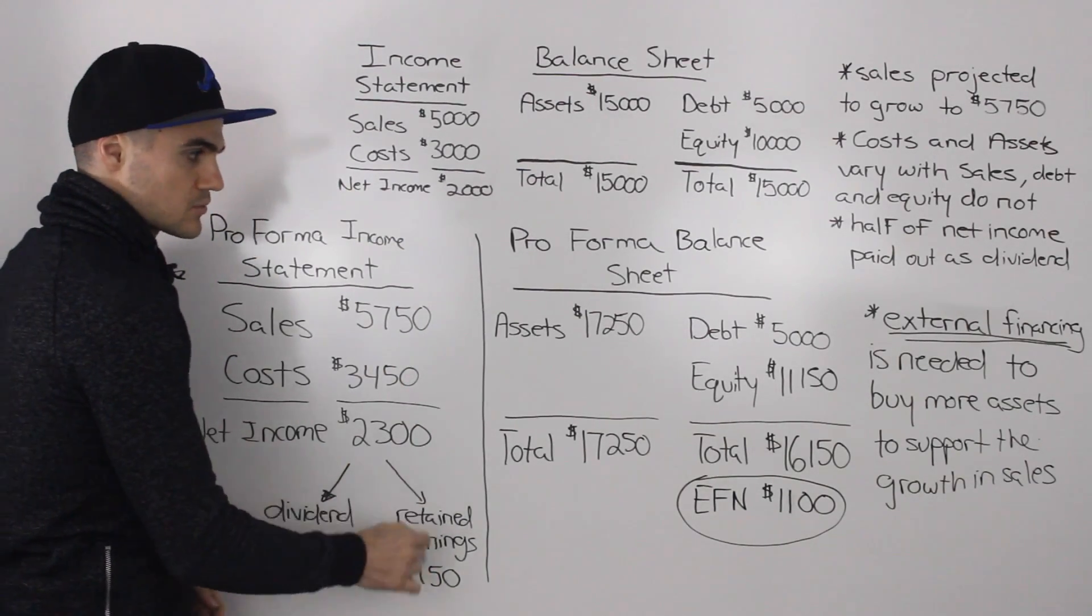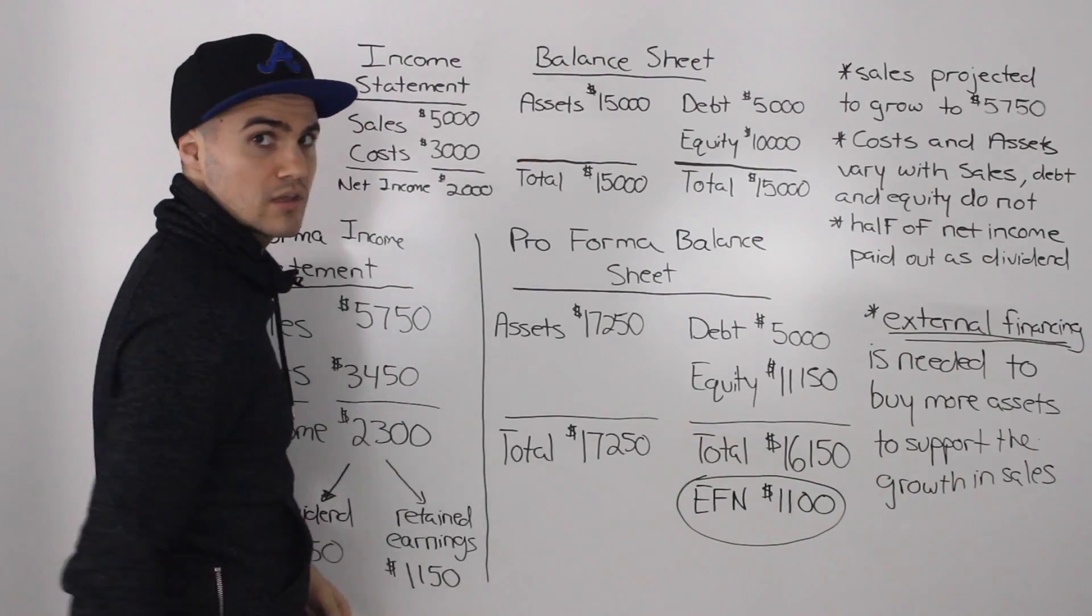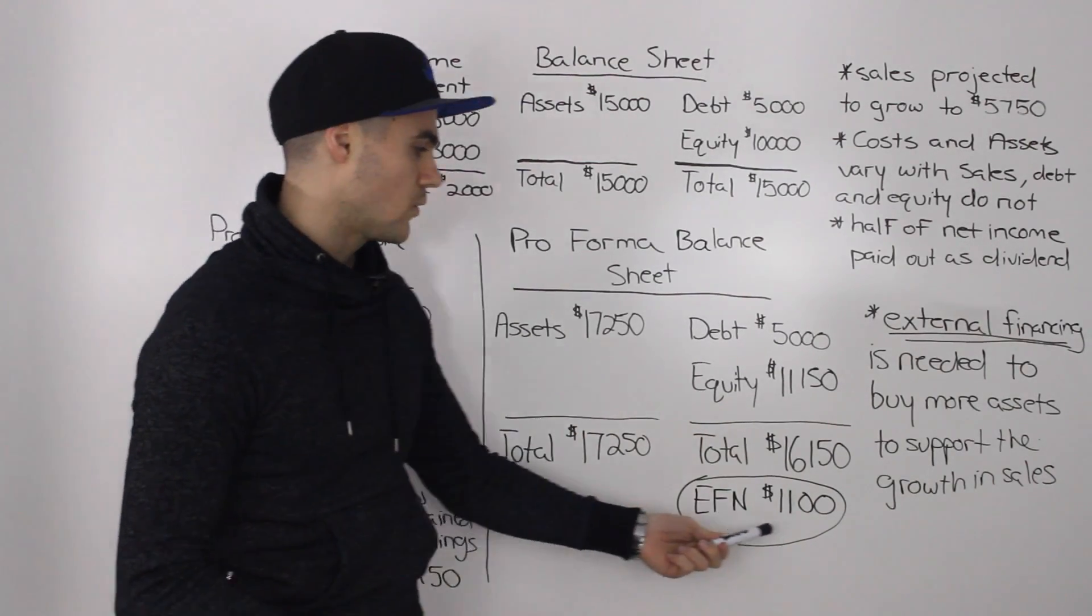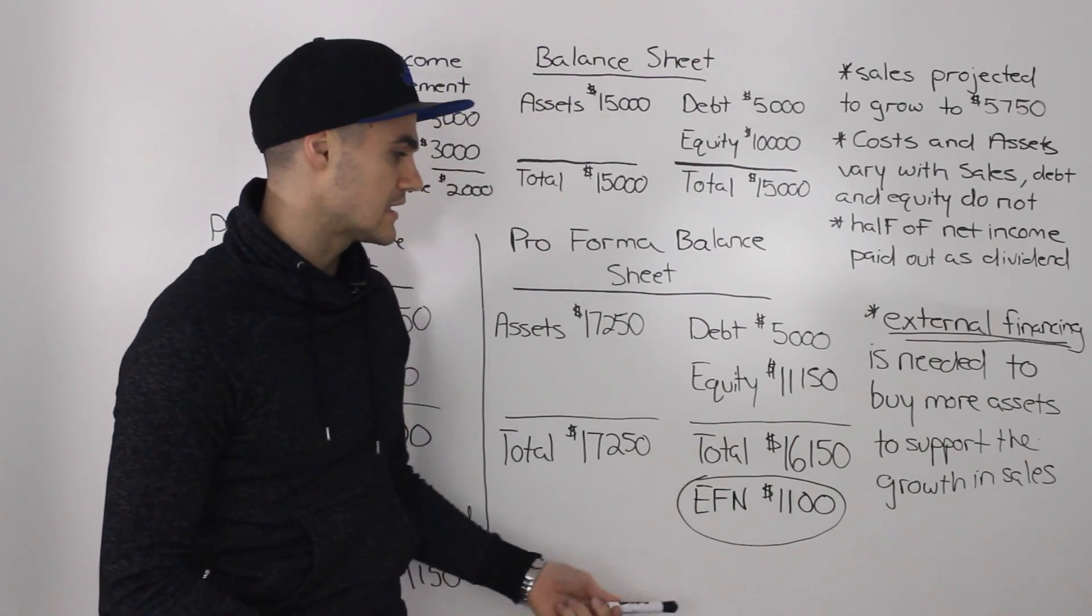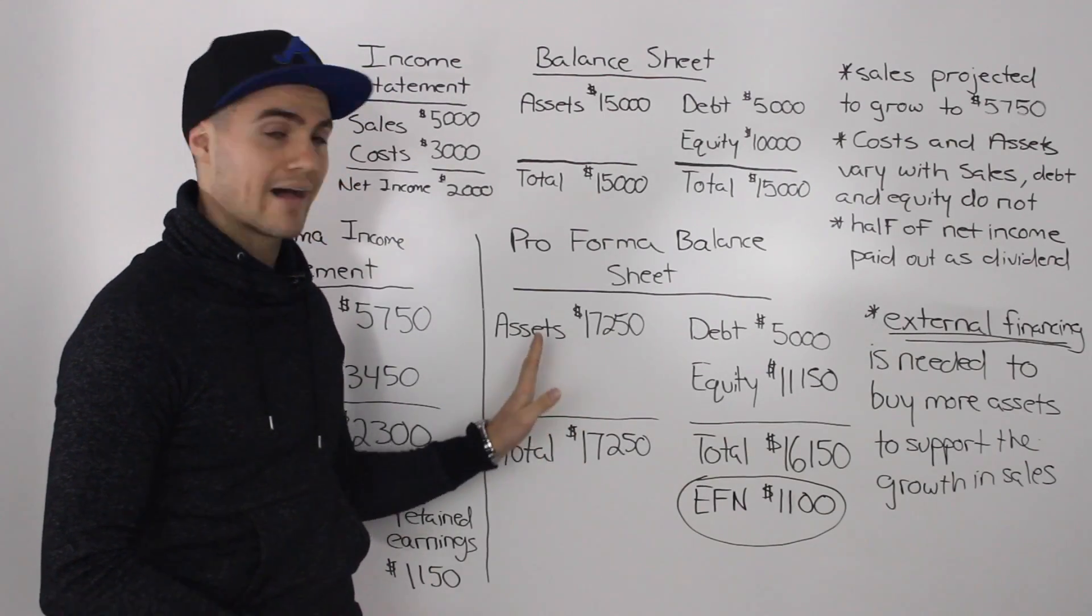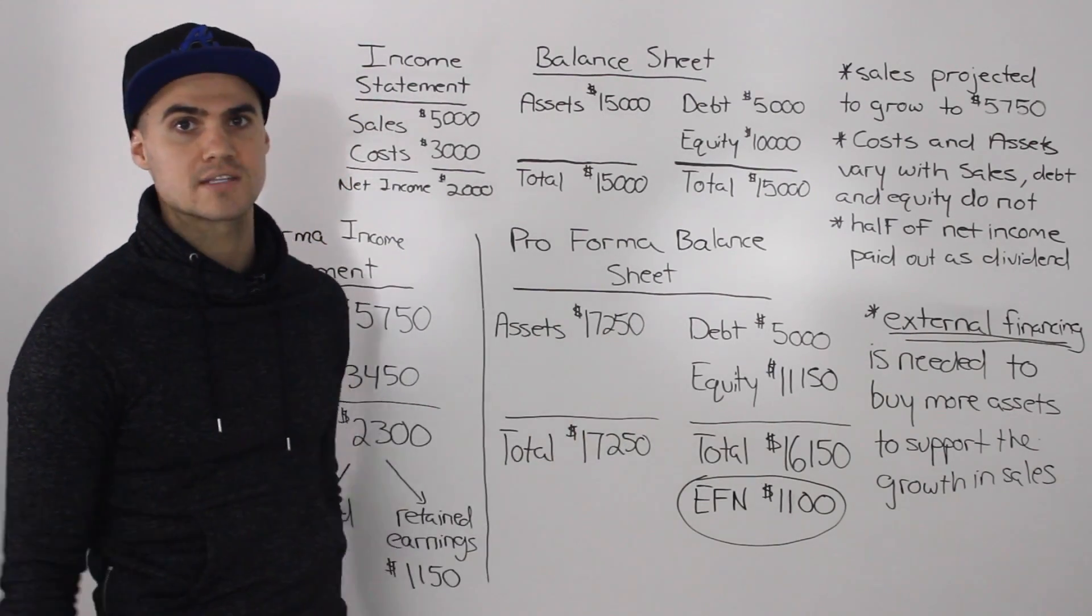You create the income statement, find the retained earnings, the retained earnings flow into the equity, you make the balance sheet, and then you see what is that external financing needed by just subtracting both sides in order for the balance sheet to balance on both the left and right side.